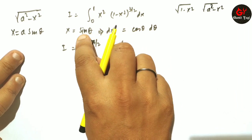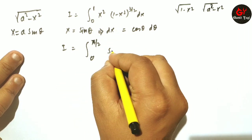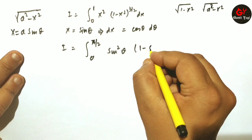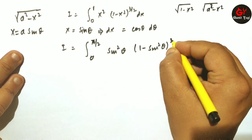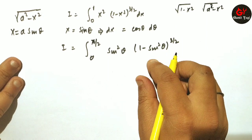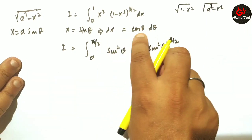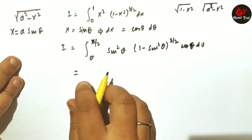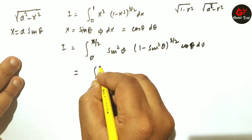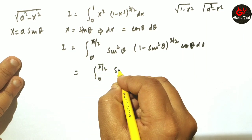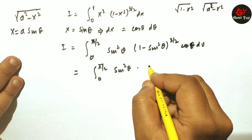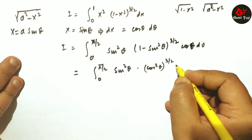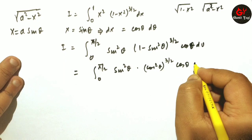Since x = sinθ, we have x² = sin²θ. And (1 - x²) = (1 - sin²θ) = cos²θ, so (1 - x²)^(3/2) = cos³θ. And dx = cosθ dθ. The integral becomes the integral from 0 to π/2 of sin²θ · cos³θ · cosθ dθ.